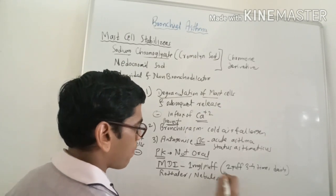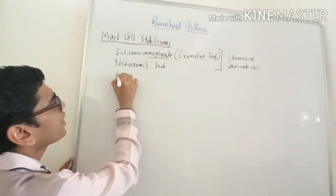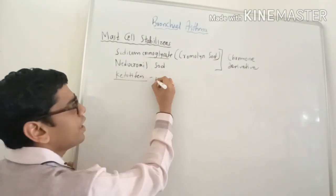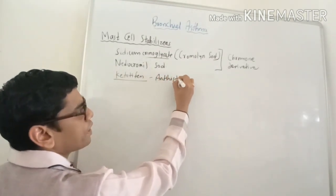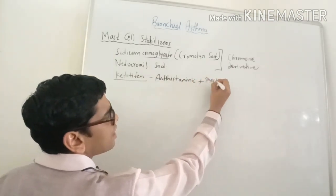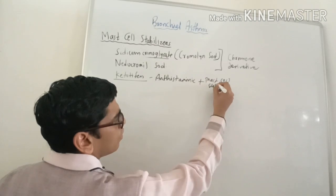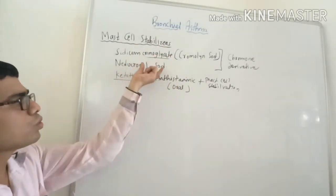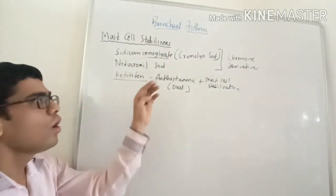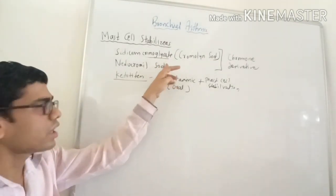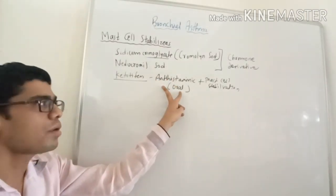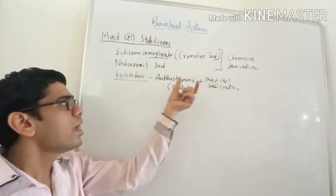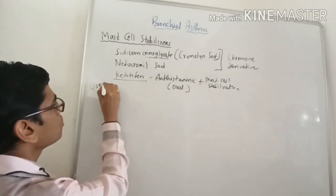The third drug in this category is ketotifen. I am mentioning it separately because it does not have the characteristic mast cell stabilizer property — it has mainly an antihistamine property, but apart from that it also has mast cell stabilization activity. The advantage is that it can be given by oral route, unlike sodium cromoglycate and nedocromil sodium which are given only through the inhalational route.